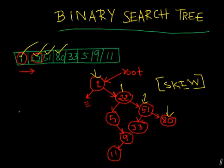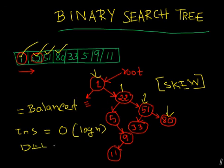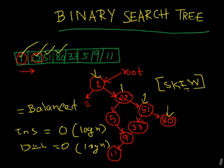For a balanced tree, if it is fully balanced, insertion complexity is O(log n), which equals the order of the height of the tree. Deletion is again O(log n). But if it is a skewed tree, complexity becomes linear — from O(log n) it becomes O(n). Let's look at the problem of skew in more detail.